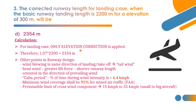Some points about runway design: wind blowing in the same direction as landing or takeoff is called tail wind. Head wind is wind blowing opposite to the direction of takeoff, giving greater lift force. With greater lift force, a shorter runway length is required. The orientation of the runway should be such that head wind is the prevailing wind.